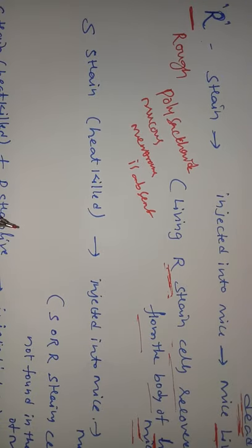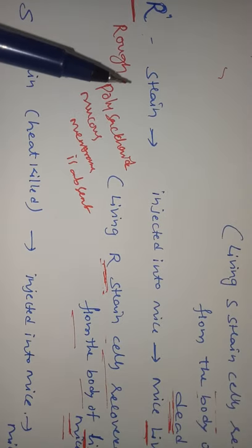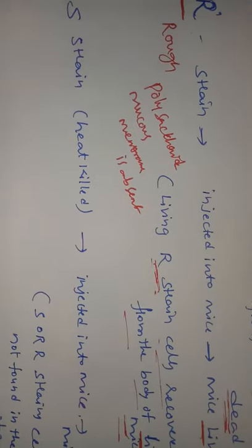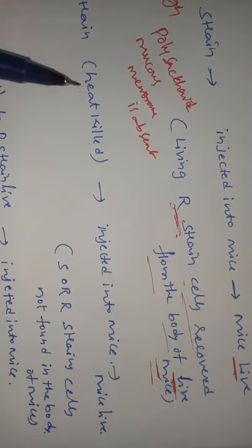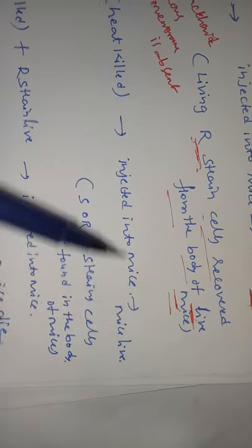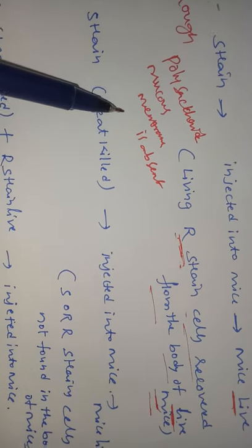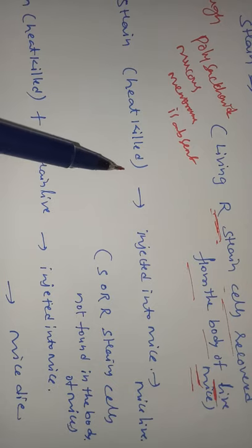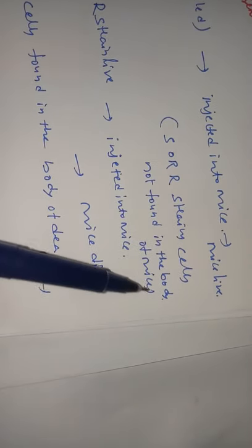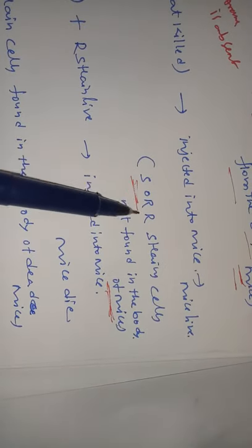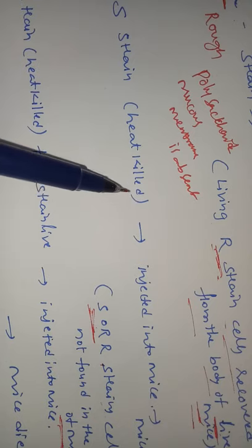In conclusion so far: S is responsible for causing the disease, and R is not responsible, due to the absence of polysaccharide. Next, they injected heat-killed S-strain into the mice. The mice remained alive, because when the S-strain is heat-killed, the polysaccharide membrane is degraded and it is not directly responsible for causing disease. No S-strain or R-strain cells were found in the body of those mice, because the bacteria cells had been killed by heat.